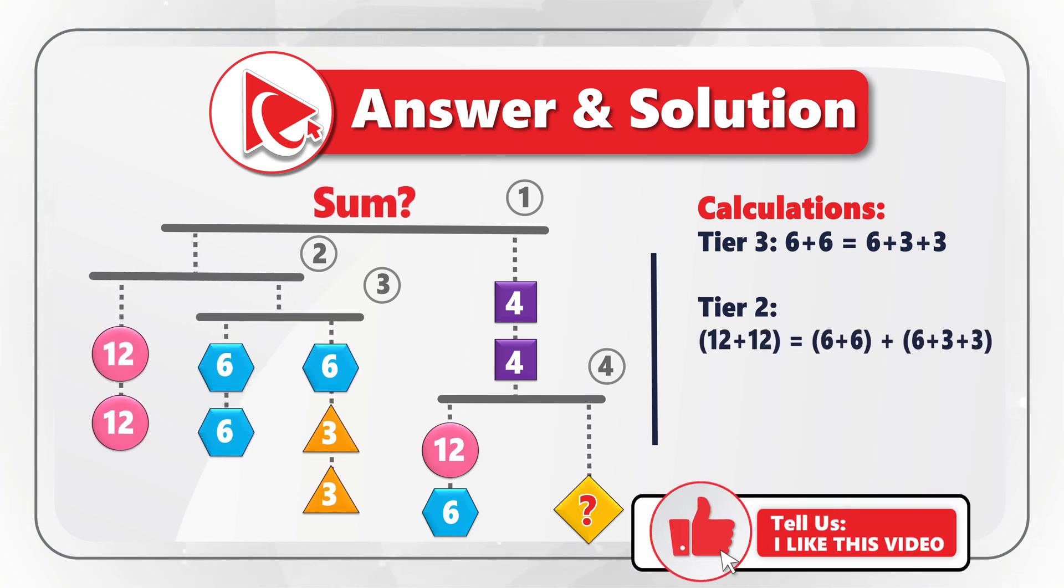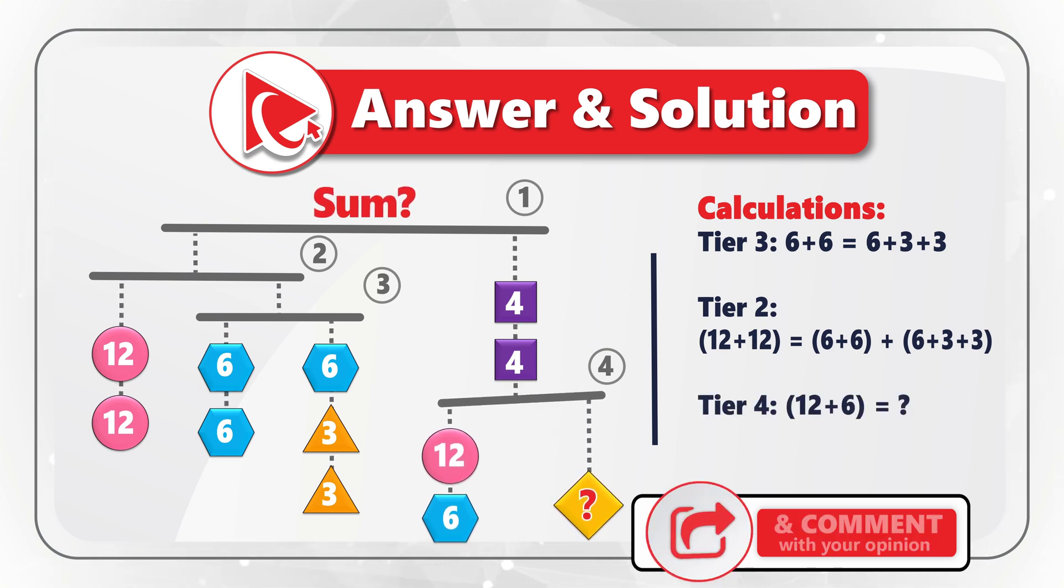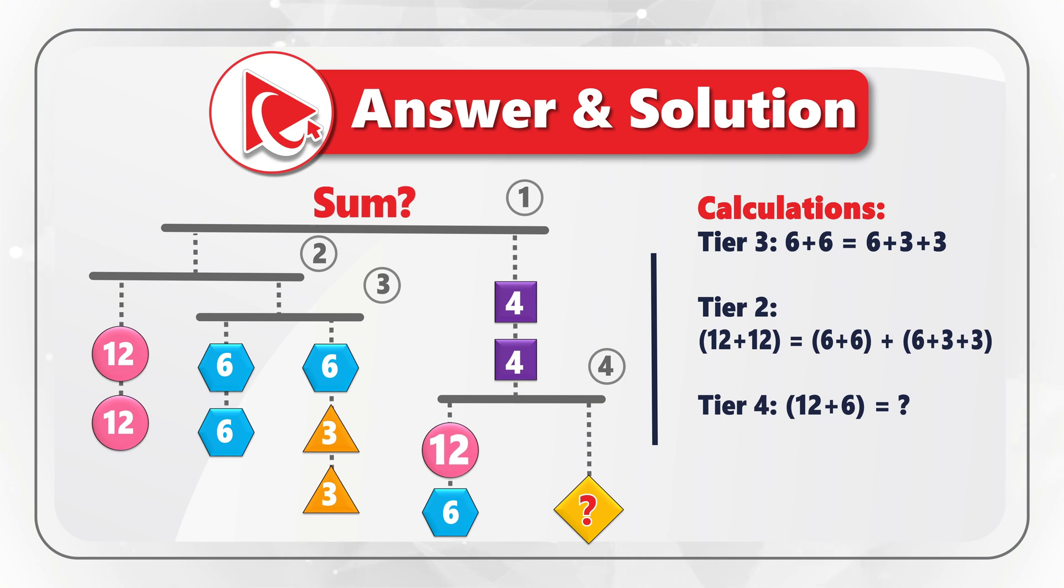Now, knowing this logic, we can calculate the missing value on tier 4. Because tier 4 needs to remain in balance, the value of 12 plus 6 should be equal to the missing value, which means that the missing value is 18. And the total sum will be calculated as the sum of all the numbers. The sum of tier 2 and tier 3 would be 24 plus 24, plus 48 on the right side of tier 1, which would equal 96.